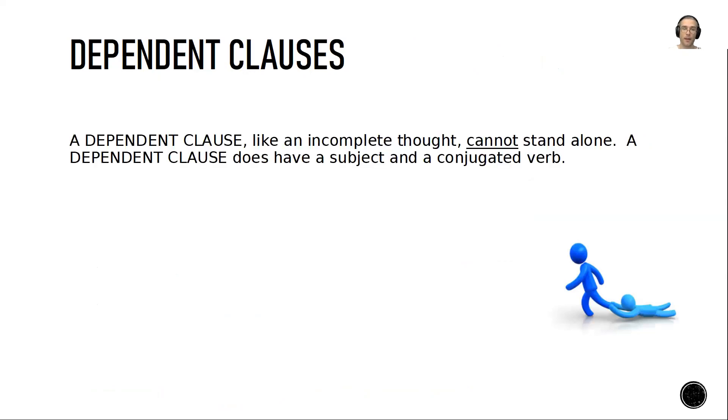The other kind of sentence fragment is a dependent clause. If you have one of those subordinate conjunctions at the start of your clause without it being attached to an independent clause, then your dependent clause cannot stand alone. A dependent clause, like an incomplete thought, cannot stand alone and is, in fact, an incomplete thought. A dependent clause does not have a subject and/or a conjugated verb.